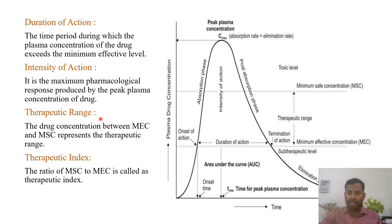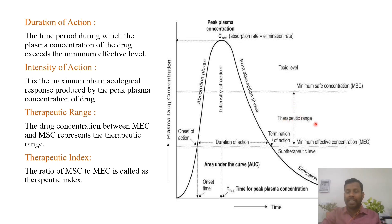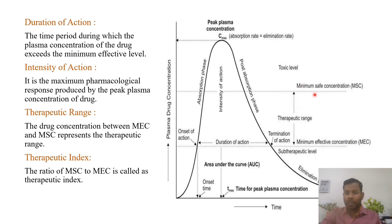Next, therapeutic range: the drug concentration between MEC and MSC is called therapeutic range. Because below MEC there will not be any drug action, and above MSC drug will show toxic effects. So the range between MEC and MSC — minimum effective concentration to maximum safe concentration — is called therapeutic range. In this range only, drug will show its action.